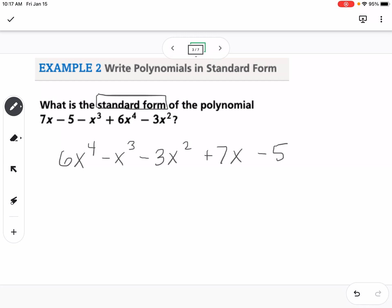So this is a 4th degree, because our highest degree is 4. And then if we're naming it by terms, we have 1, 2, 3, 4, 5 terms, so we would just call it a polynomial. So this would be named 4th degree polynomial.